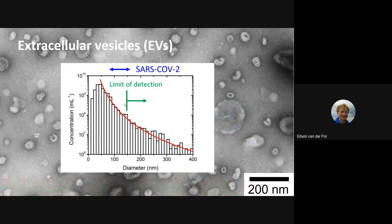Here you see this detection limit. Based on the scatter detector, we can measure this part of the vesicle population, so we still miss the majority. But this is a fraction of particles which has not been fully studied, because simply the equipment was not available before.